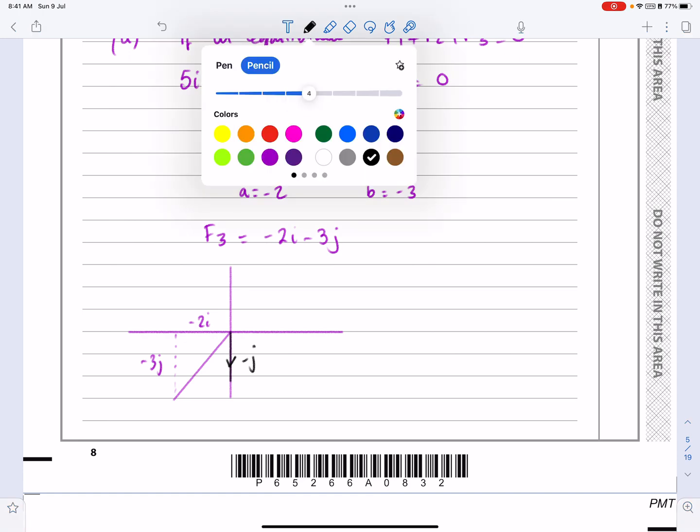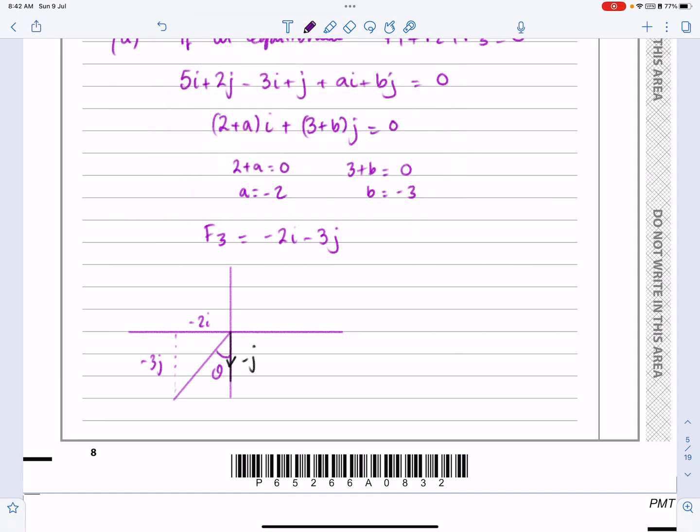So the angle that we actually want is going to be this angle theta here. But what I can find quite quickly is the angle alpha there and then work out theta from that. So if I'm working out alpha, I can say tan alpha is equal to opposite over adjacent is equal to 3 over 2. So that means that alpha works out to be 56.3 degrees, which means in this case theta or let's say this angle required, which equals theta equals 90 minus 56.3, so works out to be equal to 33.7 degrees.